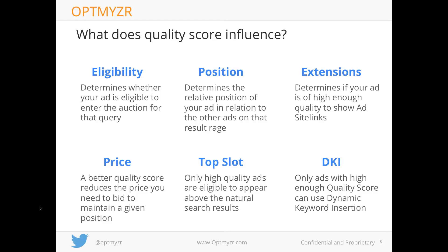In the past couple of years, Google has introduced many ad extensions — enhancements like site links, phone numbers, and reviews. Whether these extensions show next to your ad is partly determined by your quality score. Google also requires a high enough quality score for ads to appear above the search results at all — what's called the 'top slot.' Only ads with high quality score are eligible. Additionally, Dynamic Keyword Insertion (DKI), which automatically inserts your keyword into the ad text, is only available with a high enough quality score.